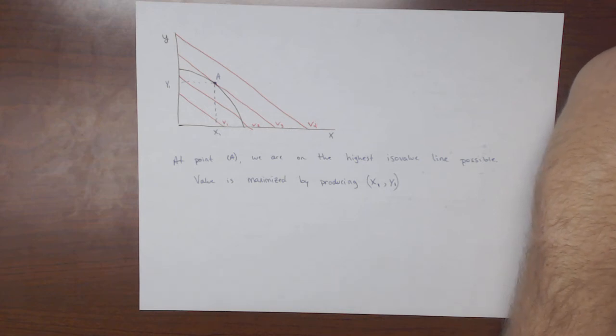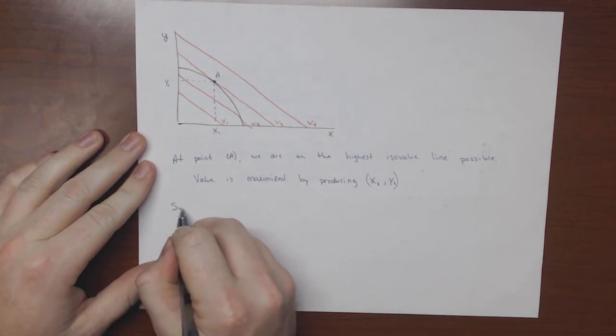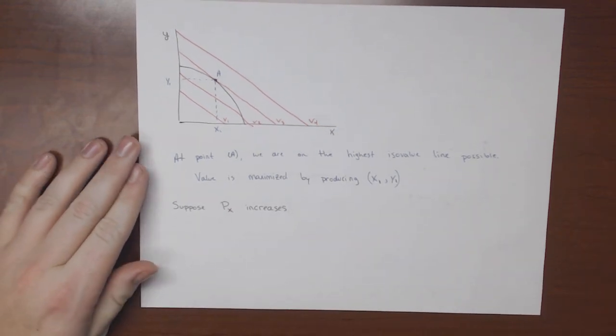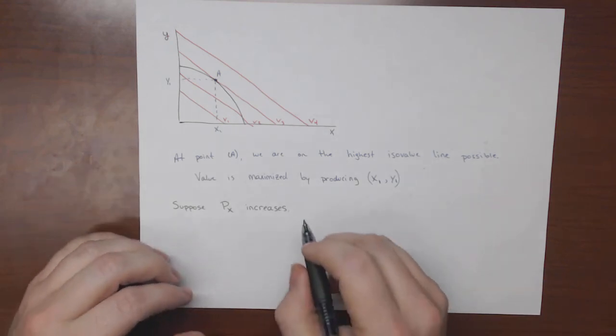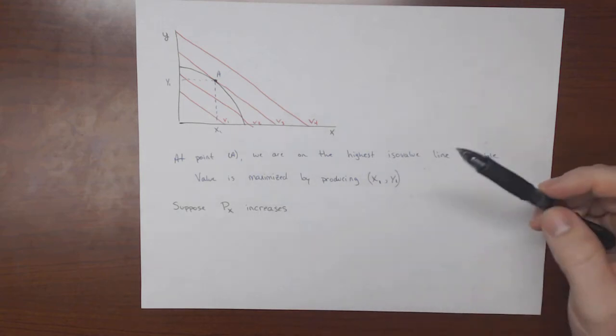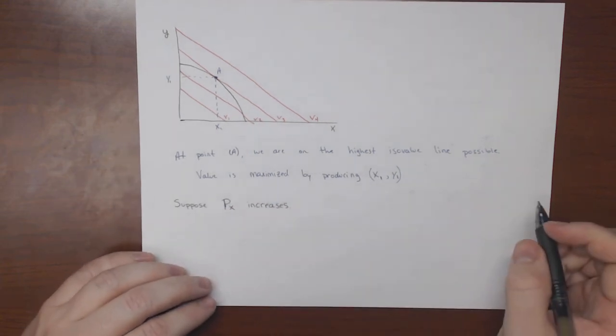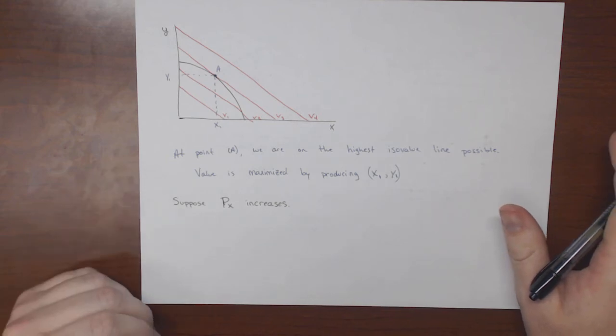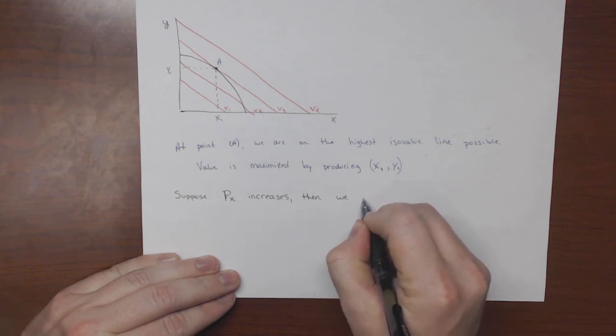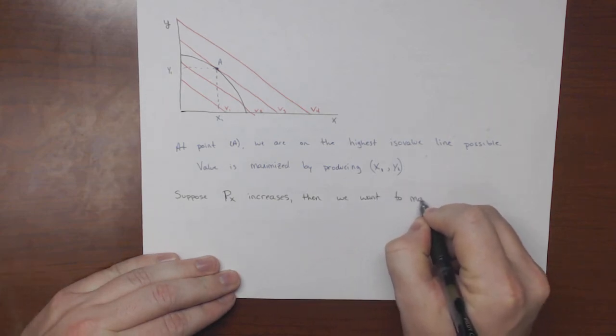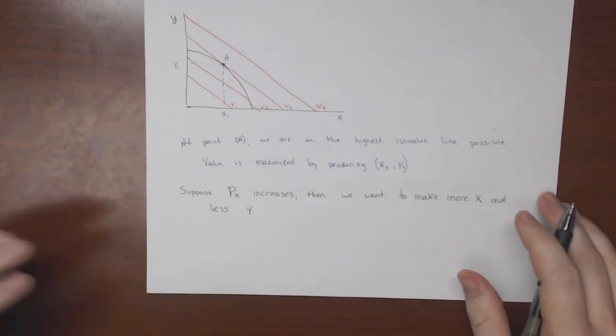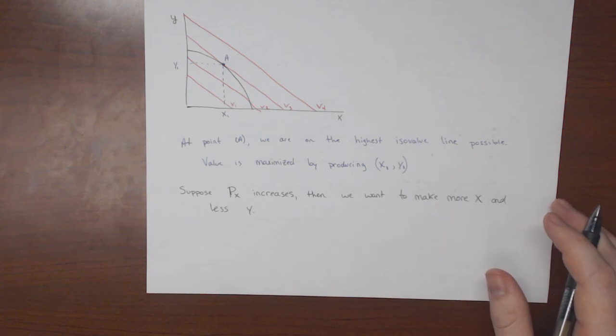Now, let's suppose that the price of X increases. So suppose the price of X increases, what do we think is going to happen? Let's make a prediction. If the price of X increases and we are selling X and Y, do you think that we're going to want to make more X or more Y? So if we can sell X for more money and nothing else changes, so our relative productivity stays the same, everything stays the same, this PPF curve doesn't move. If the price of X increases, then we want to make more X and less Y.